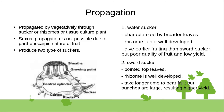Banana is propagated vegetatively using suckers, rhizome bits, or tissue culture methods. Sexual propagation is not possible in edible banana varieties. There are two types of suckers used for propagation.